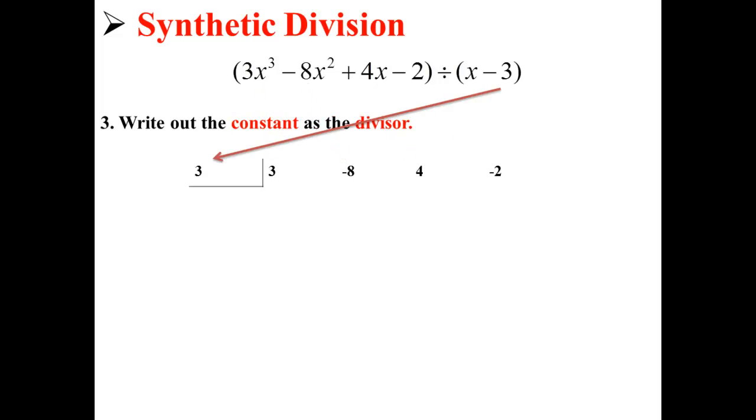The constant in our binomial expression, in this case 3, is our divisor. So we write that out. The next step is to bring the first coefficient down. Here, we've brought down 3.